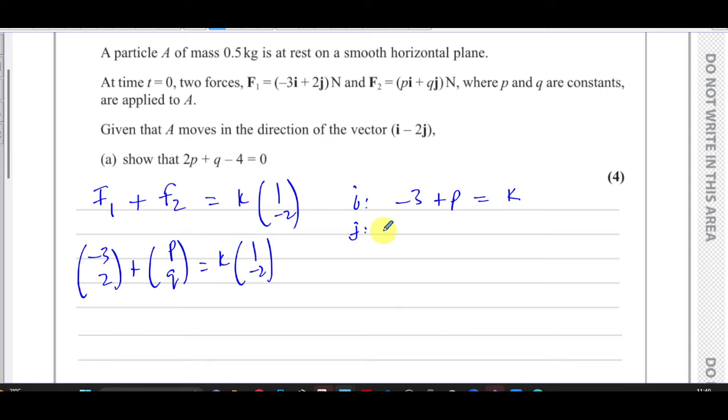So we have two equations here and we're going to end up with an equation with just p and q and no k in it. We can use substitution. We know that k is equal to minus 3 plus p, so we can substitute that into this equation. So you have 2 plus q equals minus 2 times minus 3 plus p.